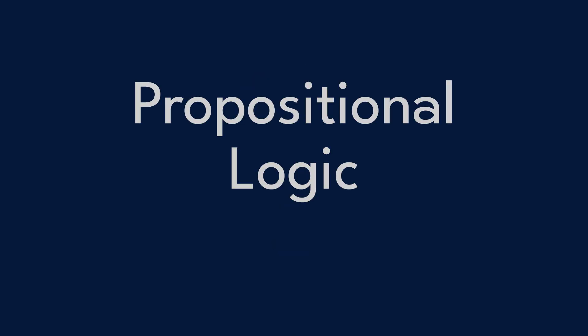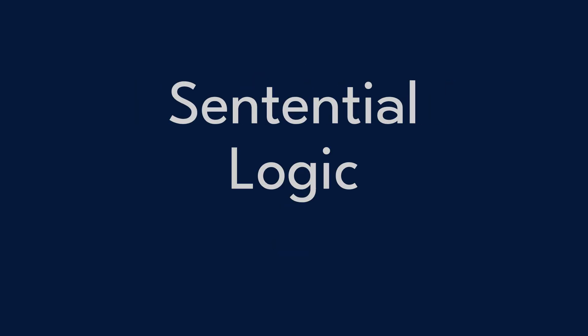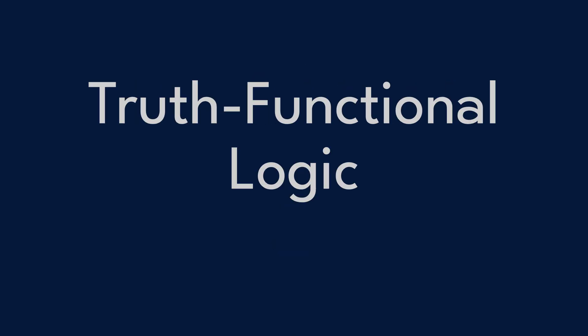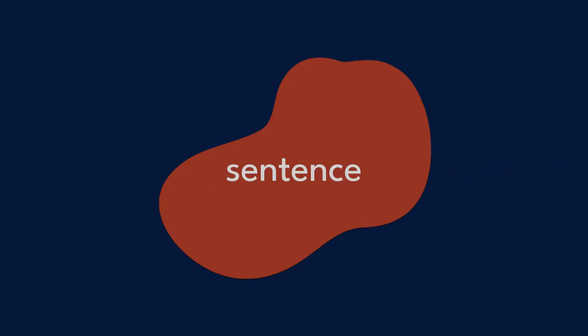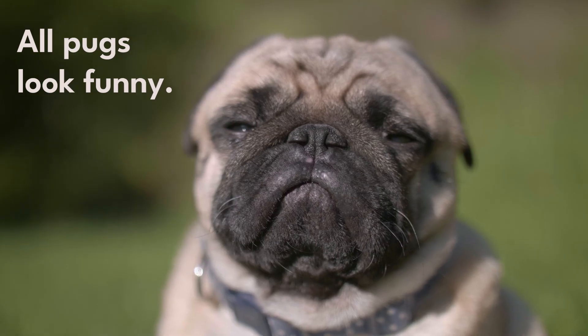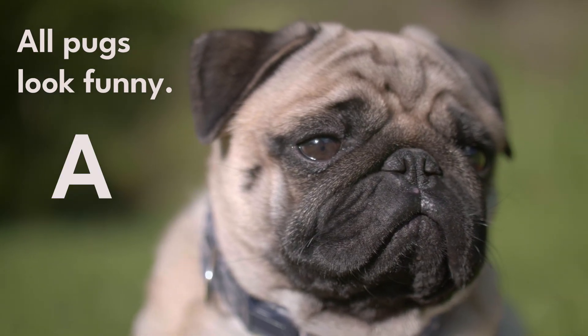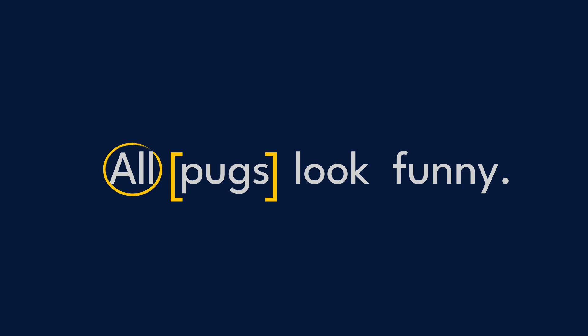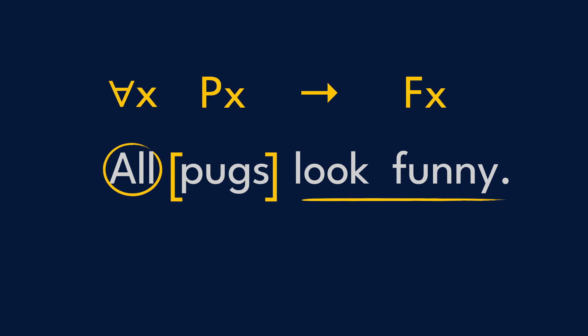Why do we even need predicate logic? If you've seen propositional logic — also called sentential logic or truth-functional logic — you know it treats whole sentences as blobs. 'All pugs look funny' just becomes a single letter, call it A. But predicate logic lets us zoom in, like this. That makes it more powerful, because it can capture all the details of sentence structure.